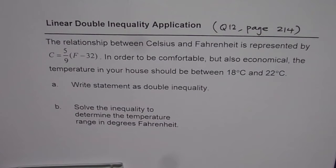The relationship between Celsius and Fahrenheit is represented by C equals 5 over 9 times F minus 32. In order to be comfortable but also economical, the temperature in your house should be between 18 degrees Celsius and 22 degrees Celsius.